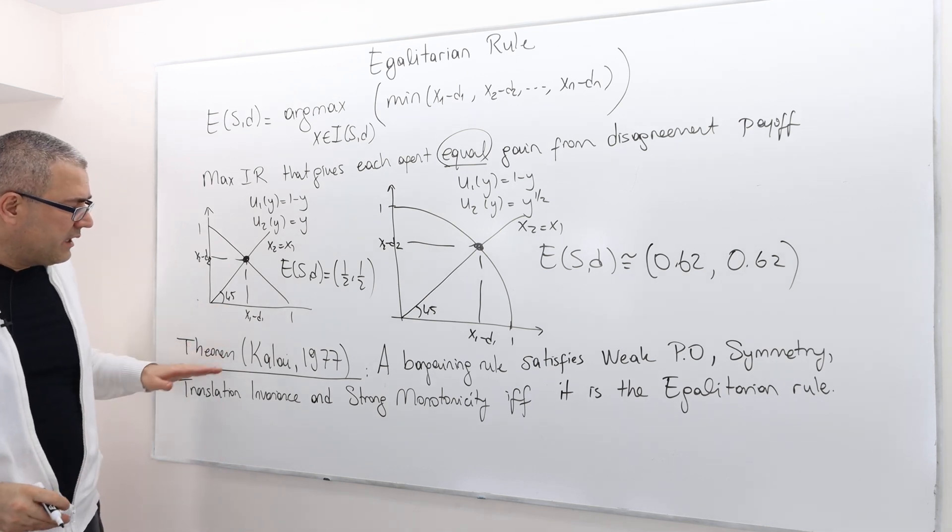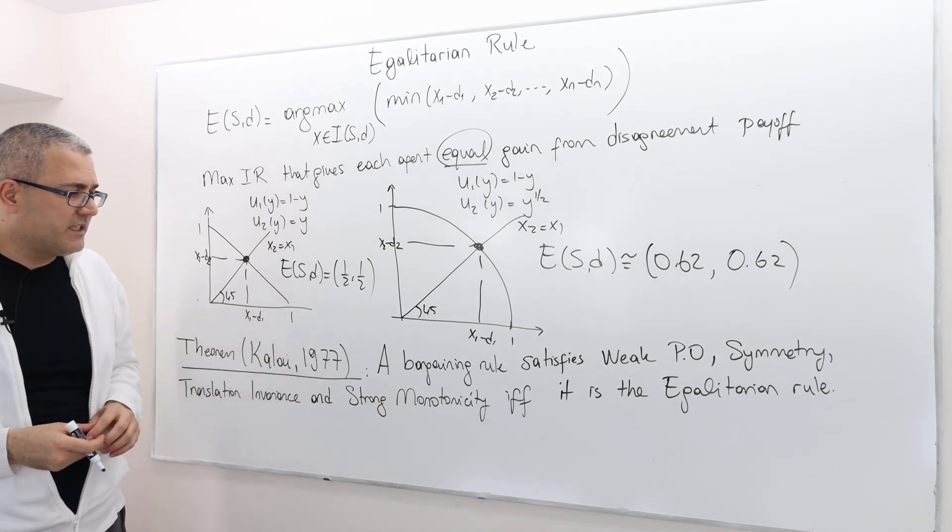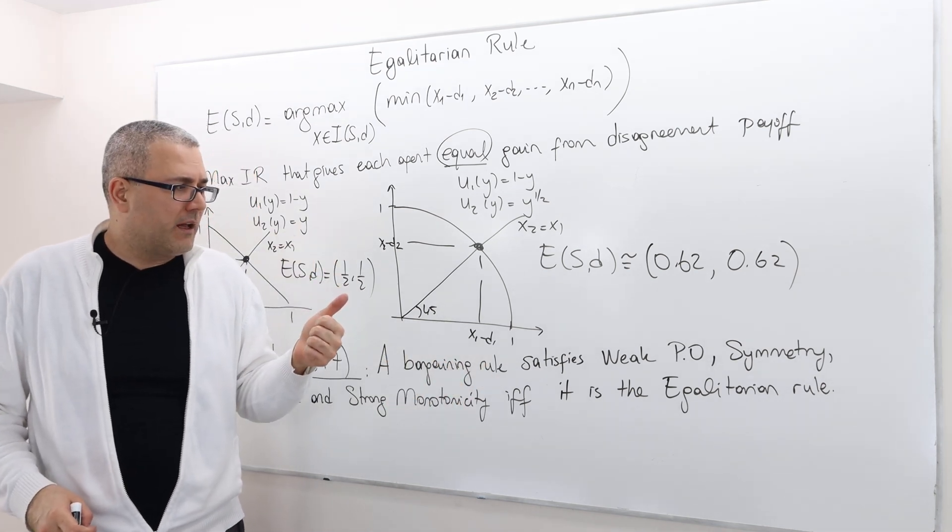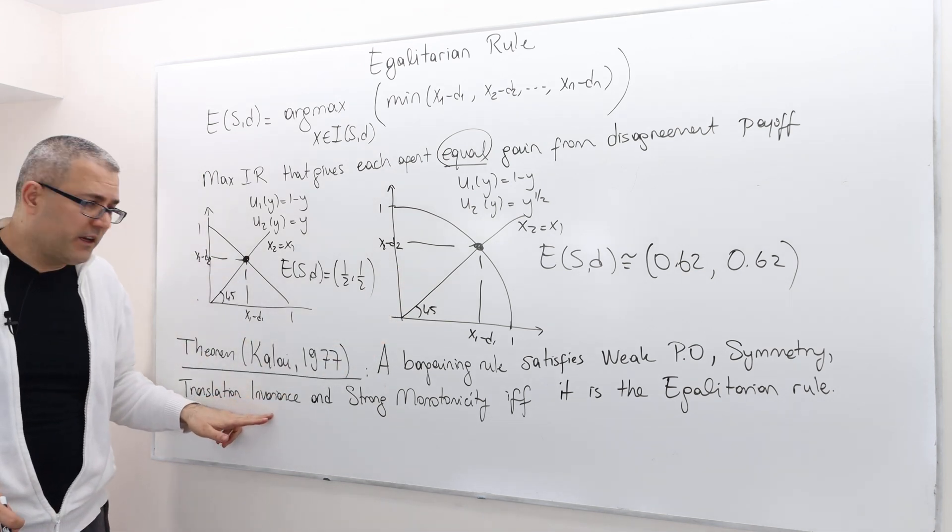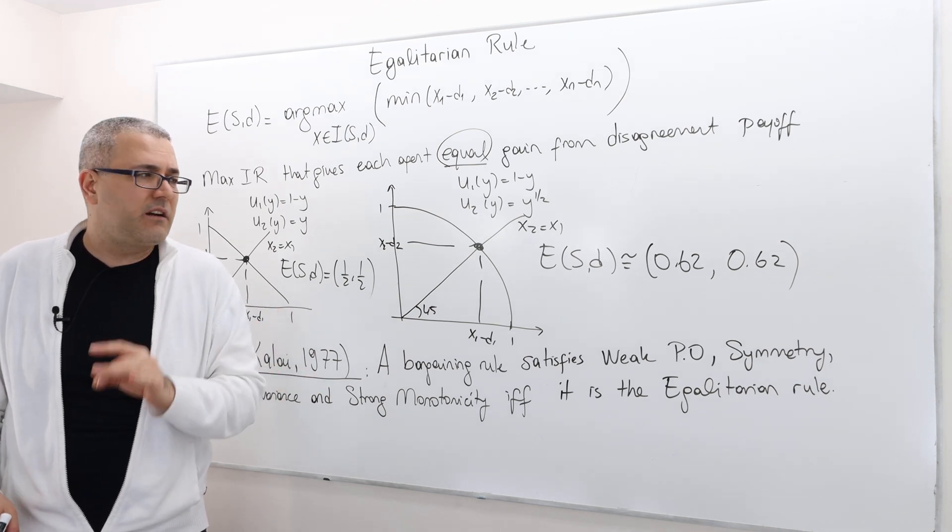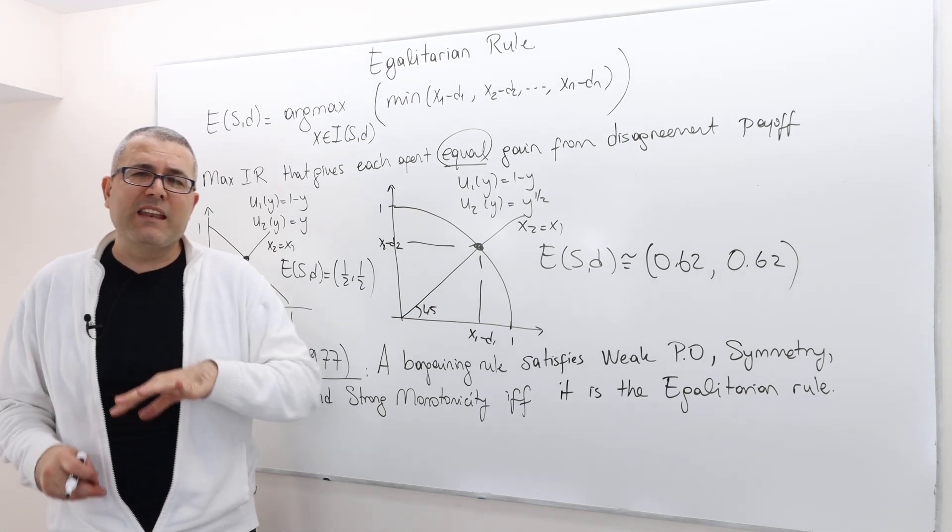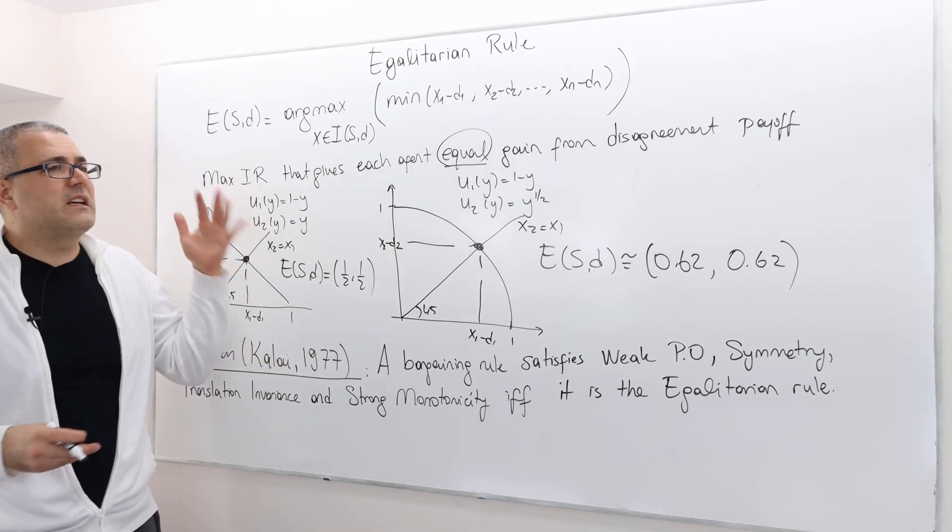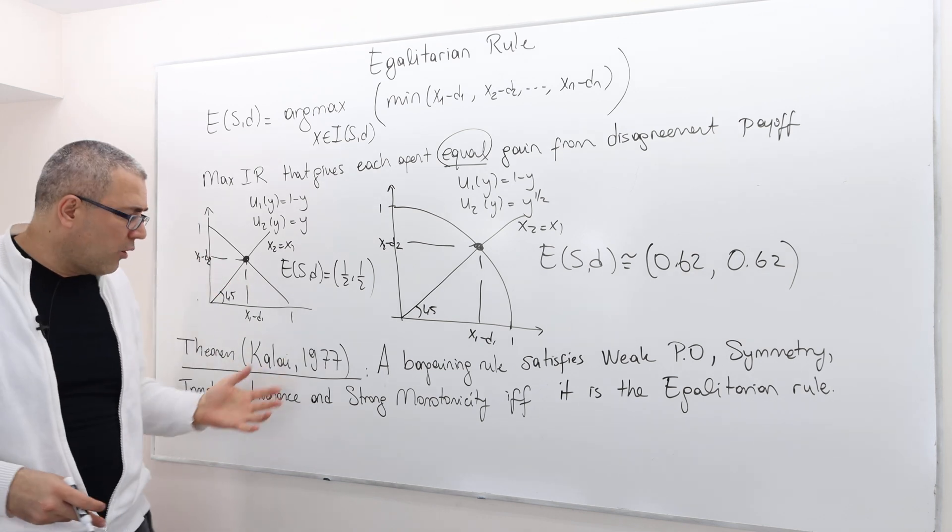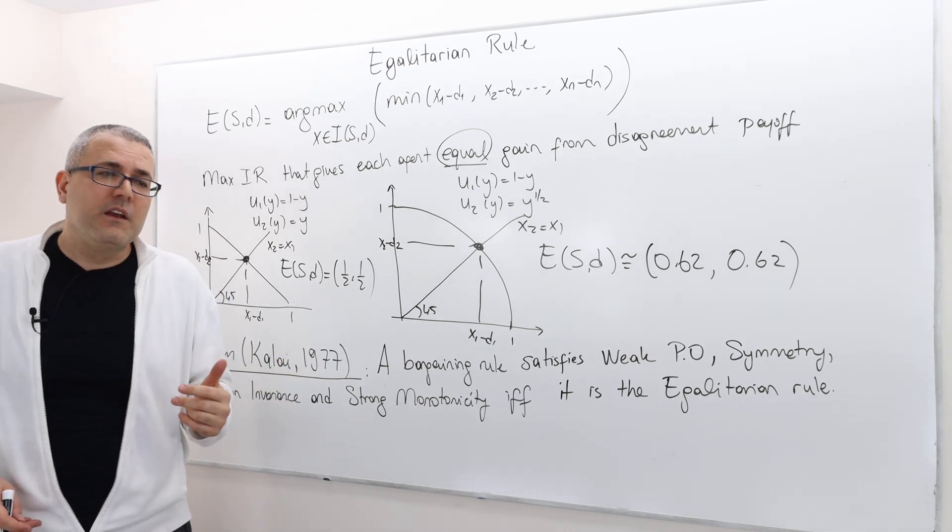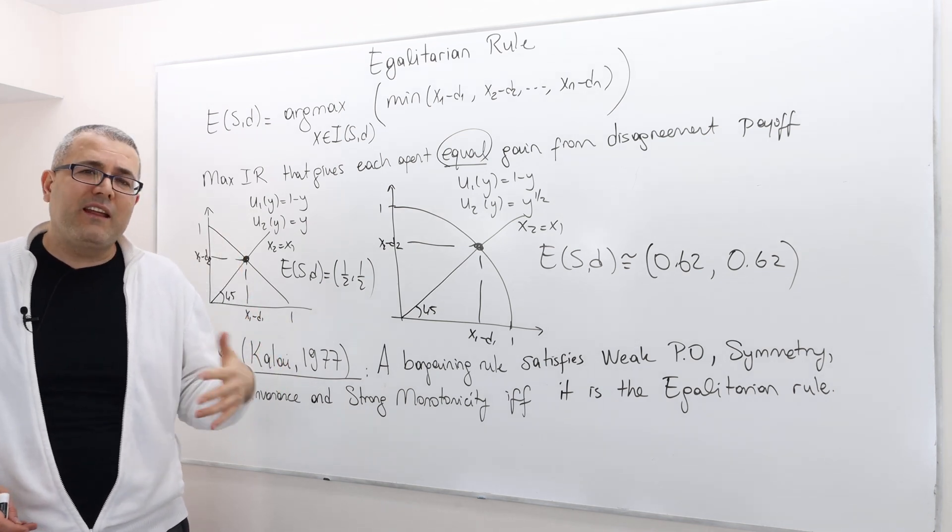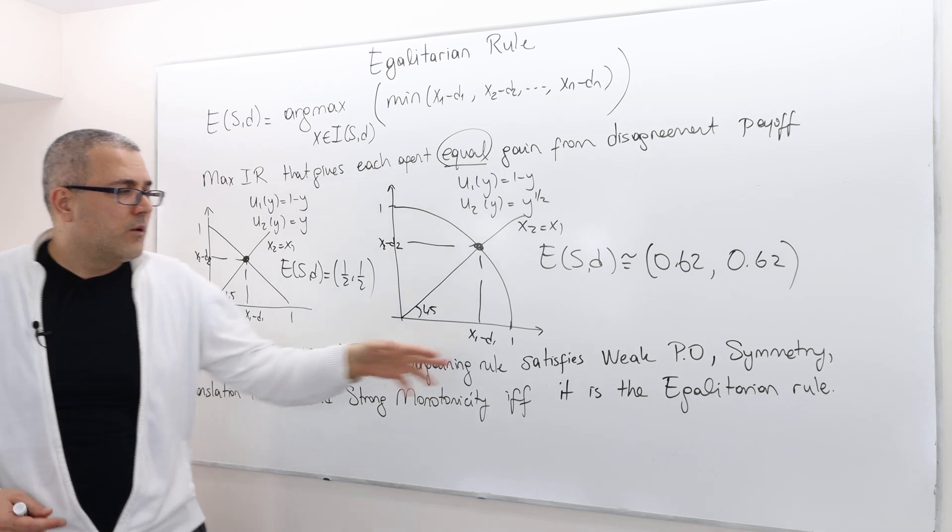Well, here's the theorem by Kalai, 1977. A bargaining rule satisfies weak Pareto-optimality, symmetry, translation invariance, and strong monotonicity, if and only if it is the egalitarian rule. So we have another characterization. That theorem basically says egalitarian rule is actually a good rule, but the goodness depends on the axioms you define. So here, if you remember the Kalai-Smorodinsky and the Nash bargaining, we had a different set of axioms.